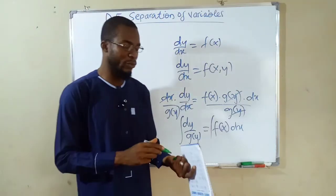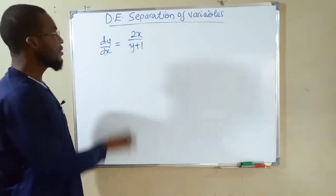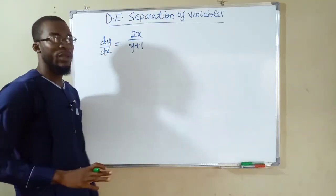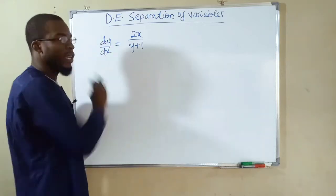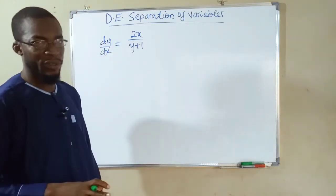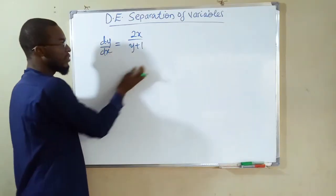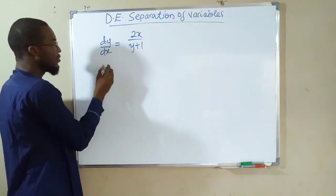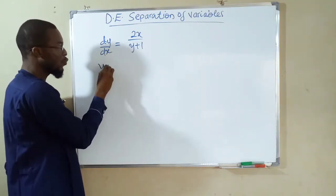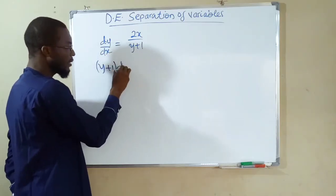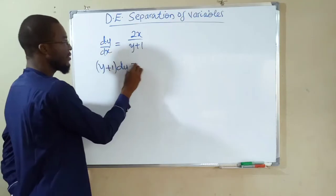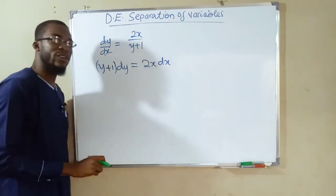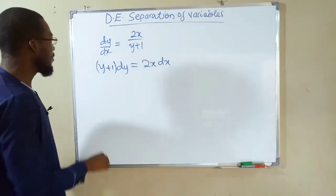Now let us look at some problems. The first problem on the board is dy over dx equal to 2x divided by y plus 1. We cannot apply integration directly — we have to separate the variables. We take dx to the right-hand side and bring y plus 1 to the left-hand side, giving us (y + 1) dy = 2x dx.